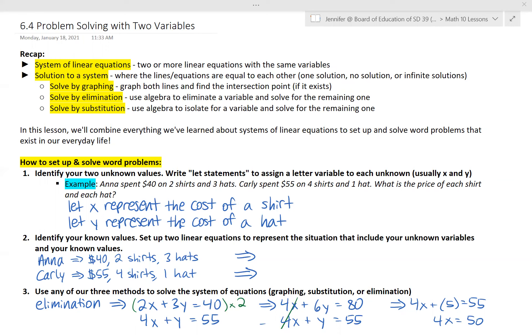It makes the most sense to just let x and y be the variables for your unknowns but you're welcome to use other letters if that works better for you. So I write my let statements: let x represent the cost of a shirt, let y represent the cost of a hat. It doesn't matter which letter goes with which item. You just need to assign these unknowns a variable.